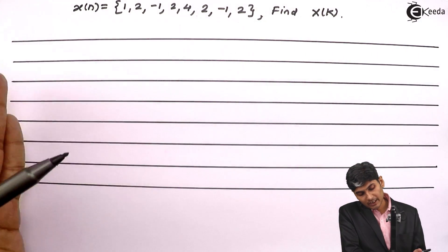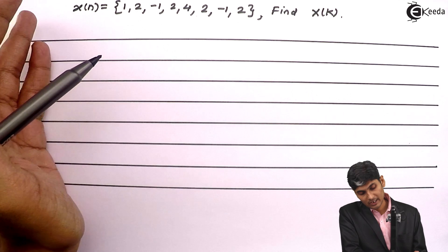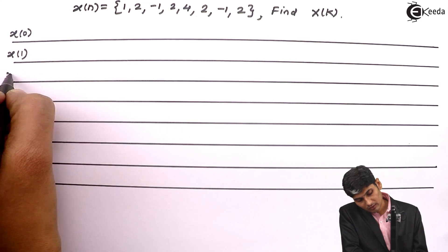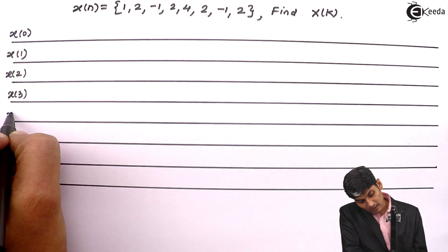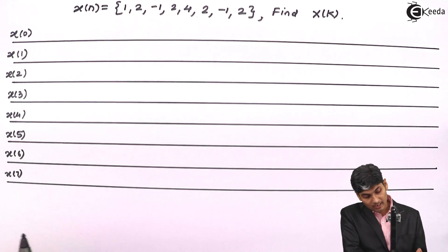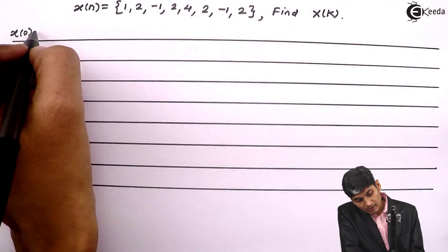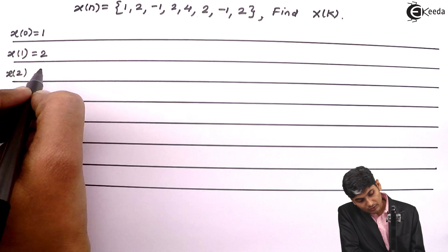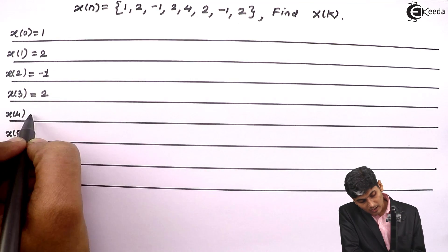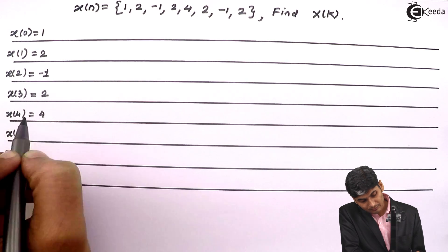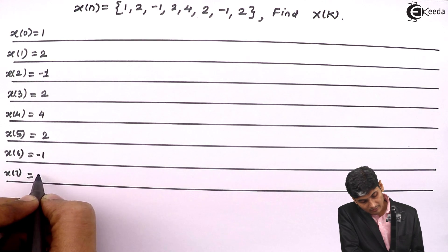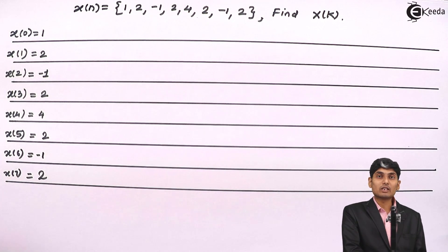The first step is to write the sequence in order as x of n. So x of n will be written as x of 0, x of 1, x of 2, x of 3, x of 4, x of 5, x of 6, and x of 7. The values are: x of 0 is 1, x of 1 is 2, x of 2 is minus 1, x of 3 is 2, x of 4 is 4, x of 5 is 2, x of 6 is minus 1, and x of 7 is 2.